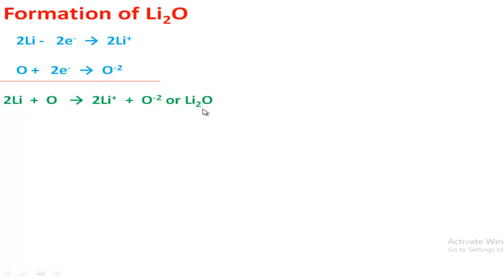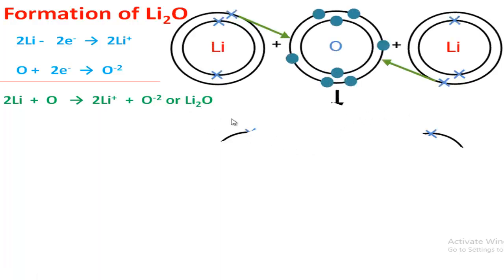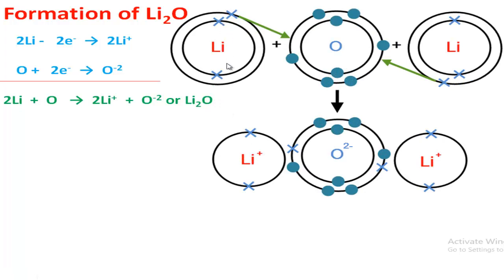The electronic configuration of oxygen is 2-6, so it needs two electrons to complete its octet. One oxygen atom accepts the two electrons and converts into oxide ion. In this way, they form the lithium oxide molecule. In the diagram: each lithium's outermost shell contains only one electron, these two electrons are released and convert into lithium ions, and oxygen's outermost shell contains six electrons — it accepts those two electrons and converts into oxide ion.